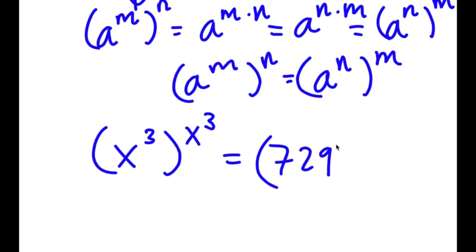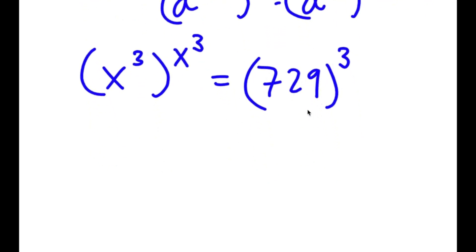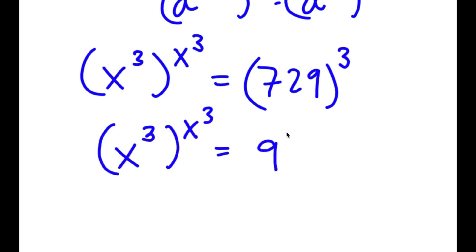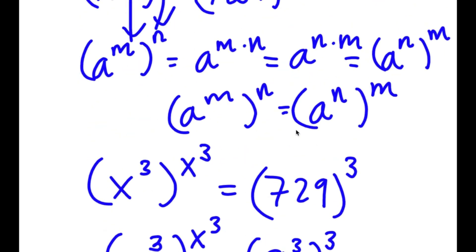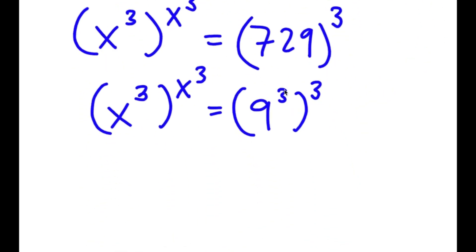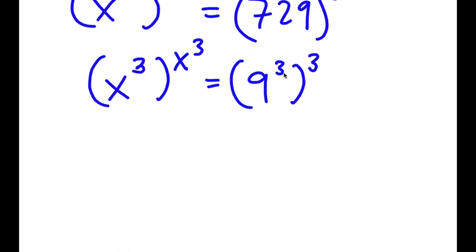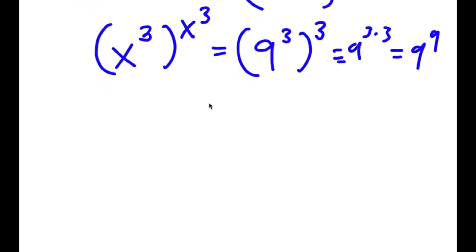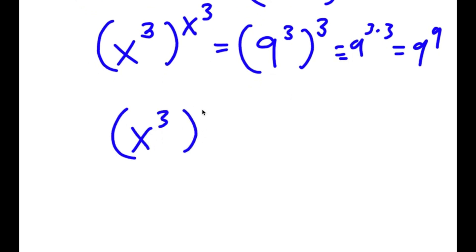This is equal to 729 to the power of 3. Now 729 is the same as 9 to the power of 3. So I have x to the power of 3 to the power of x to the power of 3 equals 9 to the power of 3 to the power of 3. And 9 to the power of 3 to the power of 3 equals 9 to the power of 9. So x to the power of 3 to the power of x to the power of 3 equals 9 to the power of 9.